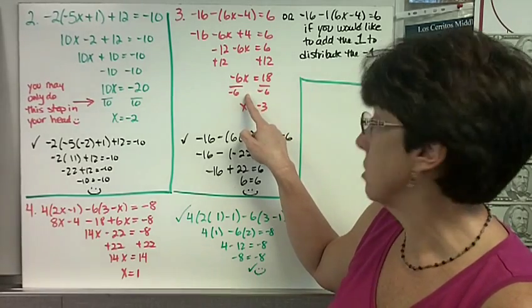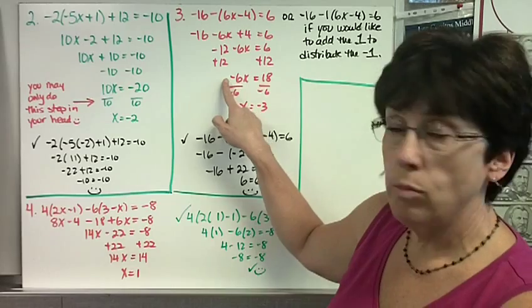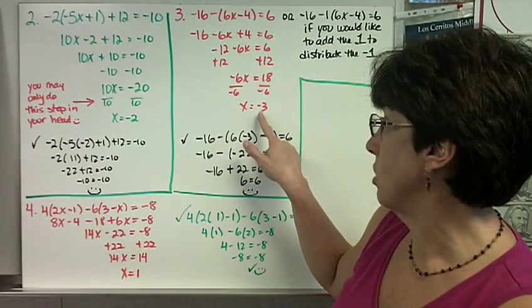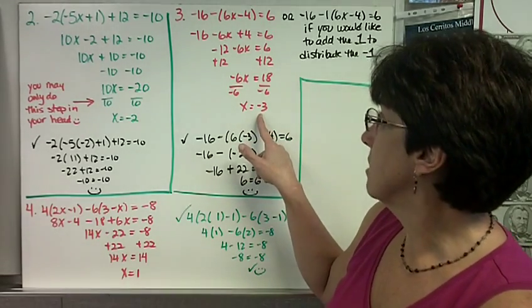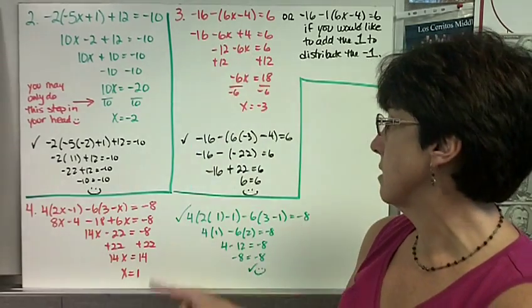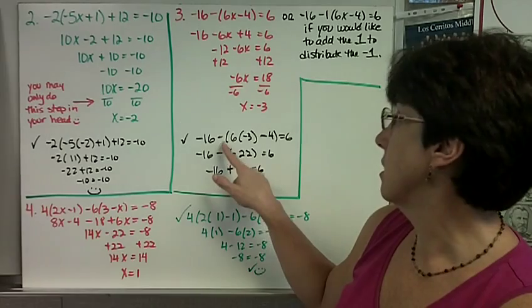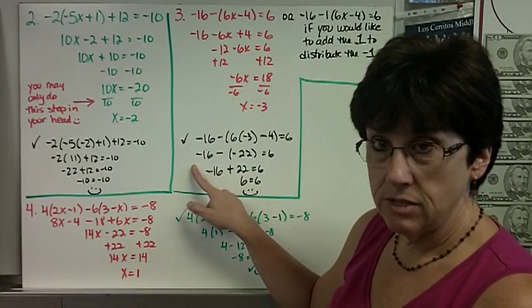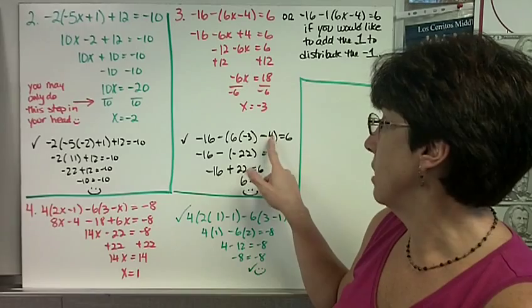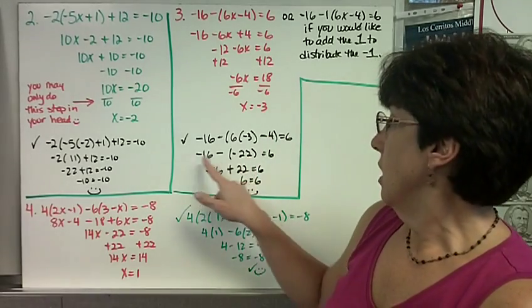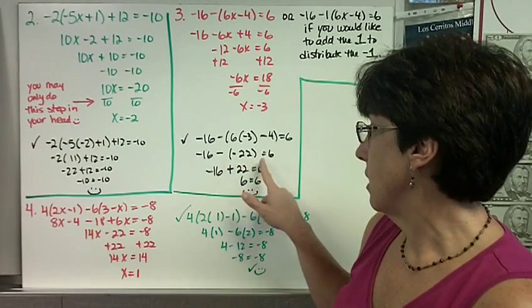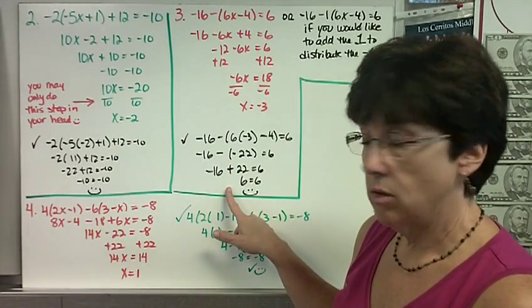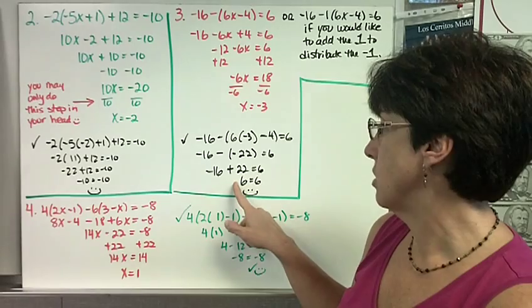You may or may not show the division step, but remember — if you have a negative coefficient, don't make a mistake and ignore it. Substitute negative 3 in for x: negative 16 minus the quantity of 6 times negative 3, minus 4, equals 6. 6 times negative 3 is negative 18, minus 4 is negative 22. Negative 16 minus a negative is the same as negative 16 plus 22 equals 6. I need to see you change that sign. Negative 16 plus 22 is 6.